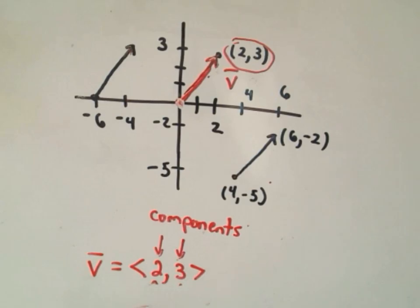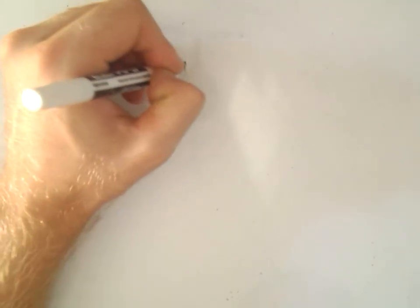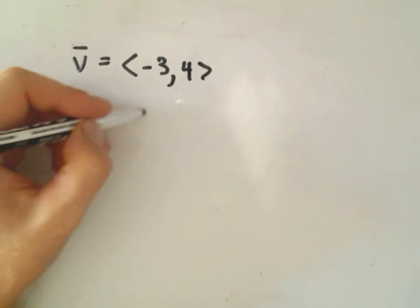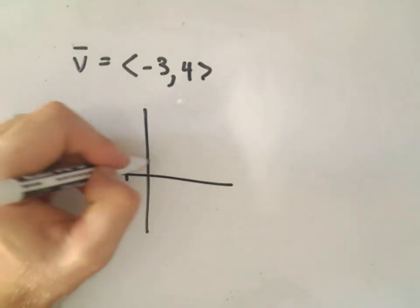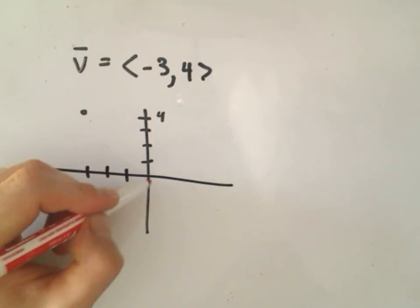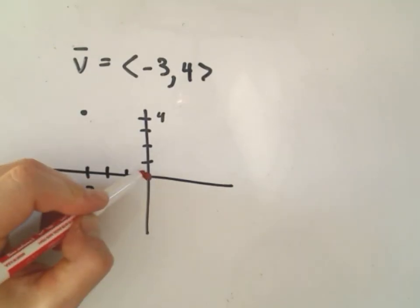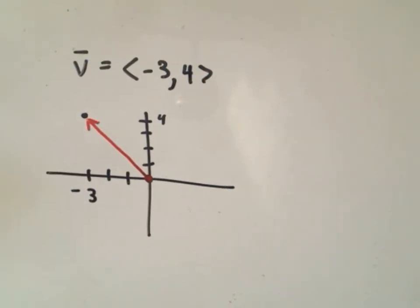So if somebody said, draw the vector V that has components <-3, 4>, all that vector does is move three units to the left and four units up. You think about where that endpoint is, and vector V would be the vector that starts at the origin and points to that endpoint. Where it ends dictates the length, or magnitude, of the vector.